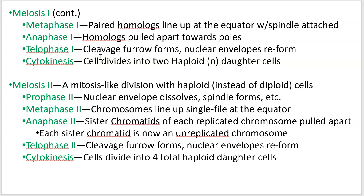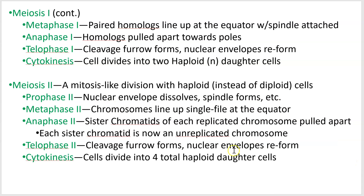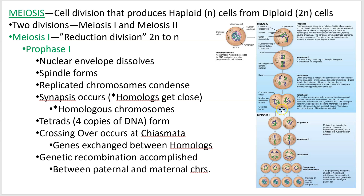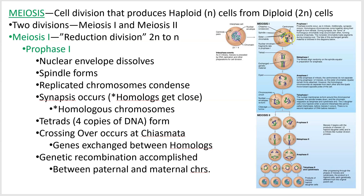Cytokinesis occurs afterwards — that's when you actually get the cells completing division and forming two new cells, which then go on to meiosis II. After meiosis I, we end up with two haploid cells. Using a simple example with only four chromosomes representing two pairs: by the end of meiosis I, each cell only has two chromosomes. So we've gone from four — the diploid number — to two — the haploid number — thus the reduction division.